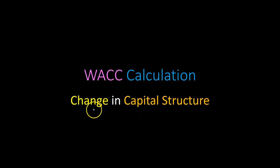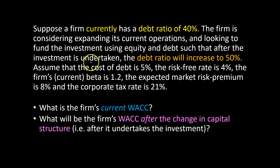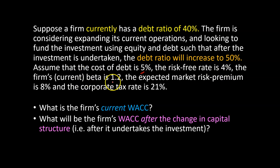Here is a numerical example to illustrate this point. Suppose a firm currently has a debt ratio of 40% and the firm is considering expanding its current operations and looking to fund the investment using equity and debt, such that after the investment is undertaken, the debt ratio will increase to 50%. You're told that the cost of debt is 5%, the risk-free rate is 4%, and the firm's current beta is 1.2.